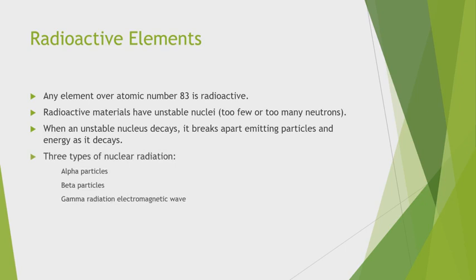There are three types of nuclear radiation: alpha particles, beta particles, and gamma radiation. Alpha particles are positively charged. Beta particles are negatively charged. Gamma radiation has no charge.